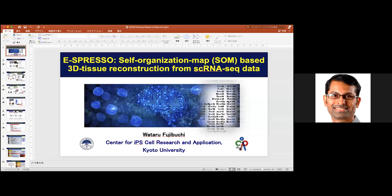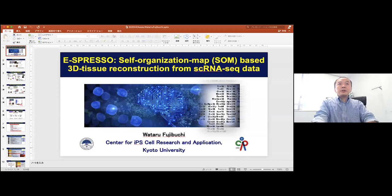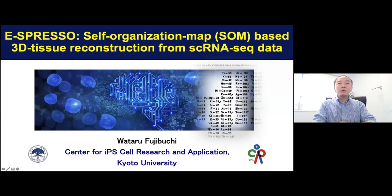Fujibuchi, who received — he's a professor at the Center for IPS Research and Application in Kyoto University, and is actually a biophysicist by training. He's talking about self-organizing maps in 3D tissue reconstruction. Wataru, look forward to your talk. Thank you very much, kind introduction. So my name is Wataru Fujibuchi from Kyoto University, and today I'm going to talk about my recent study of self-organization map-based 3D tissue reconstruction method.